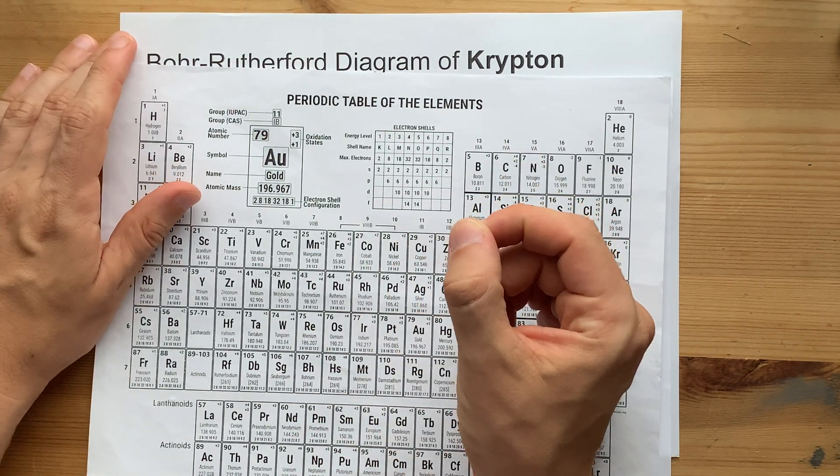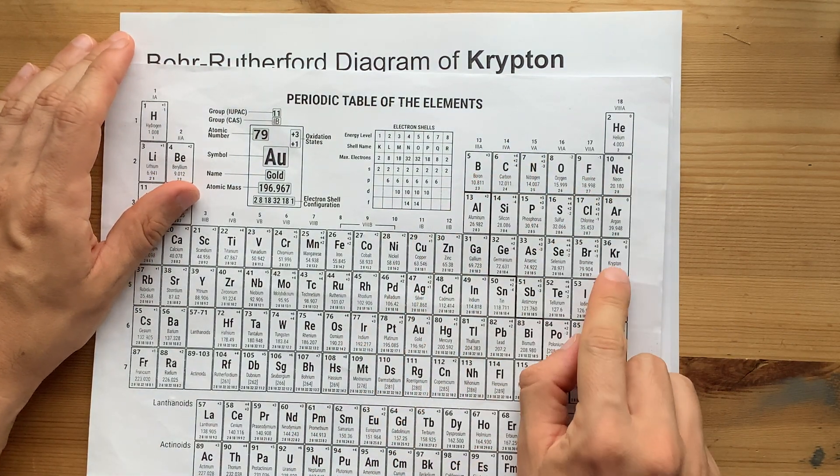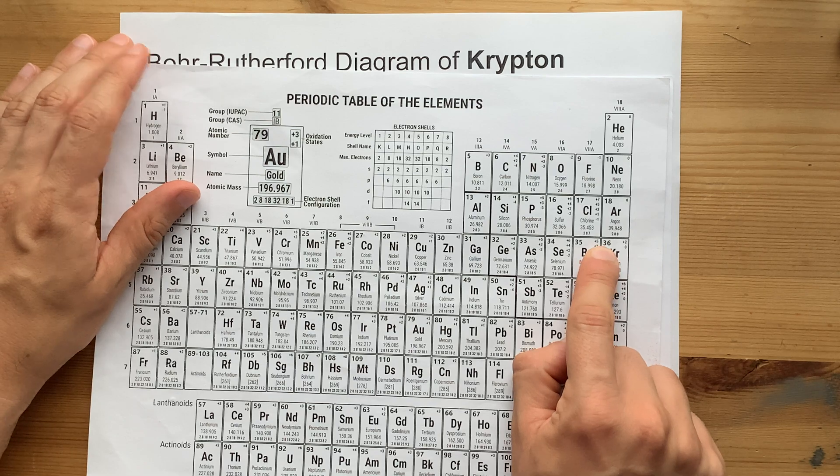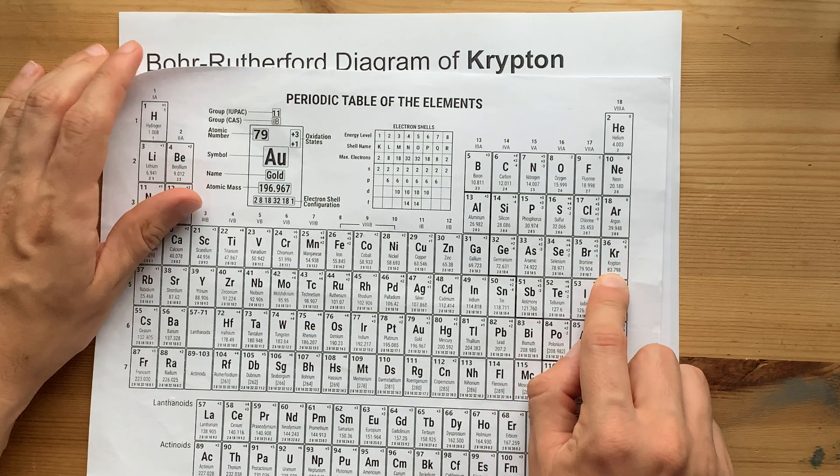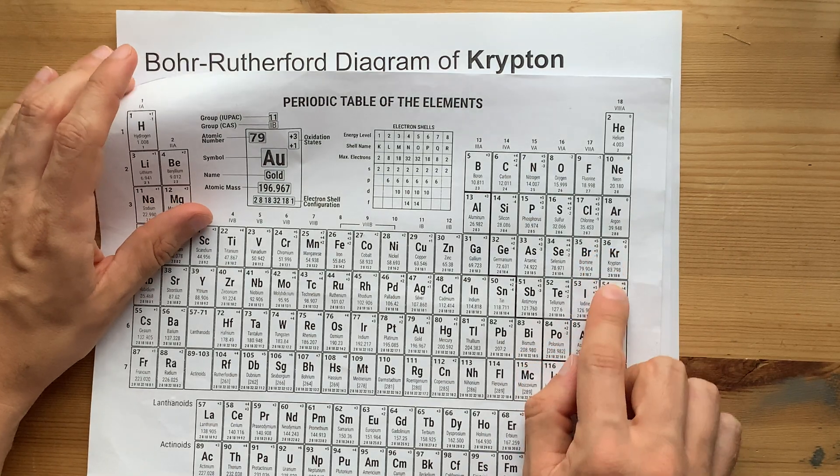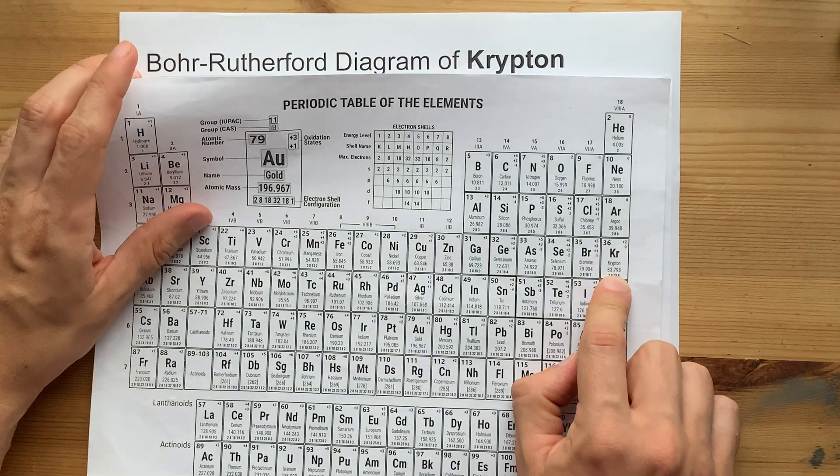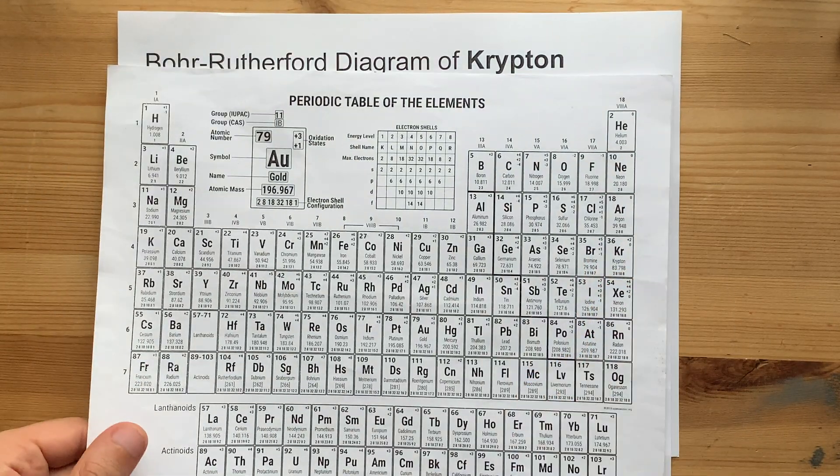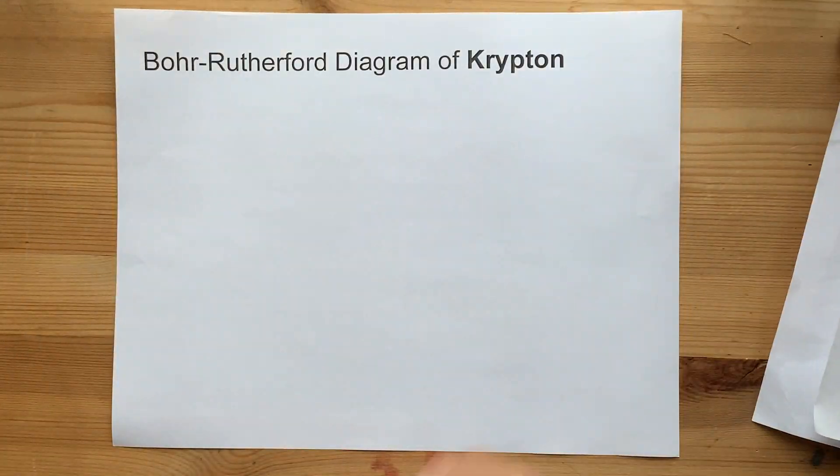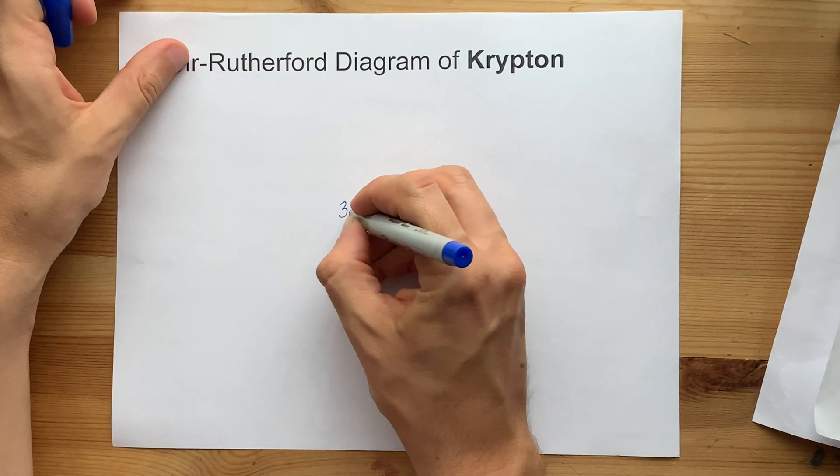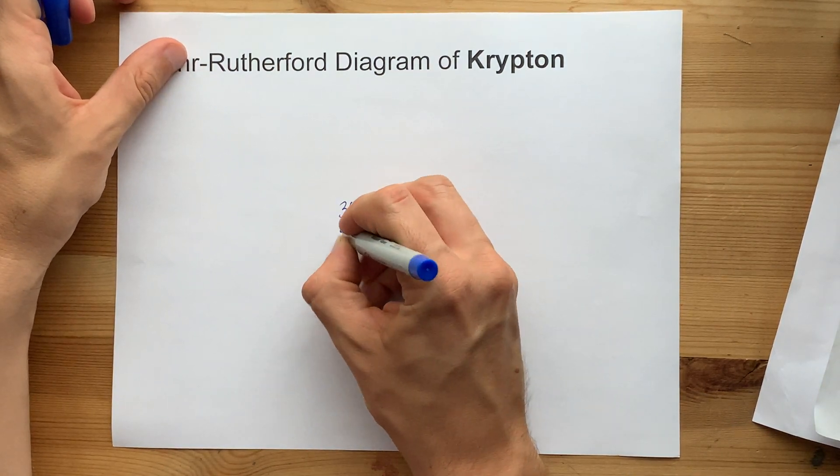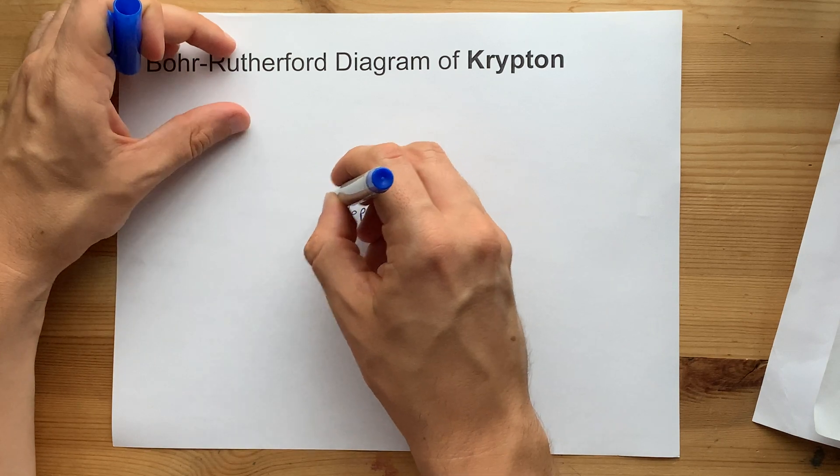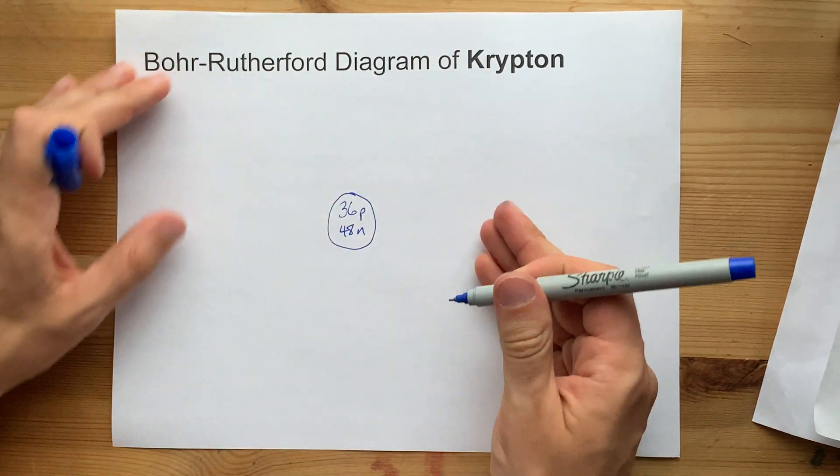Let's start the Bohr-Rutherford Diagram the classic way. Krypton, 36 protons, 84 minus 36, which is 48 neutrons. Let's do it. 36 protons, 48 neutrons, all in the nucleus. Beautiful nucleus.